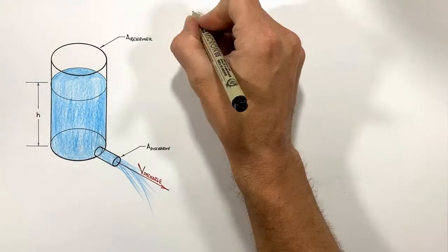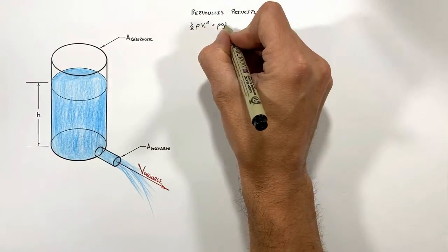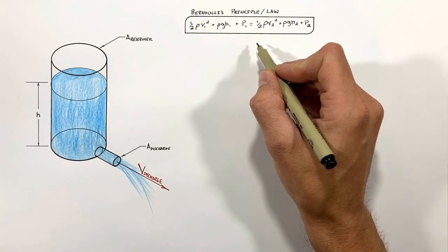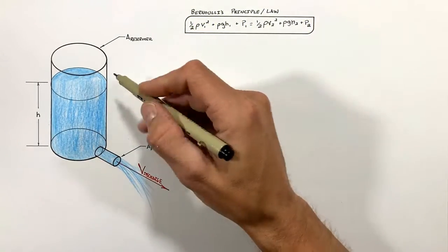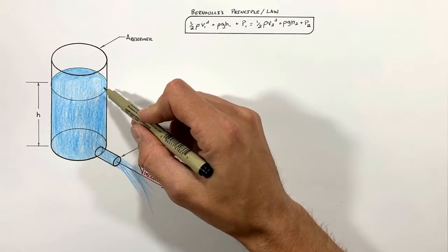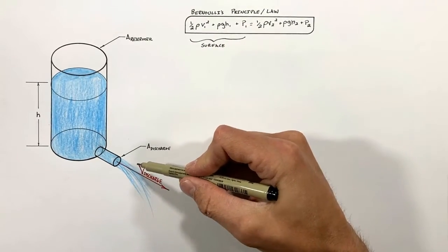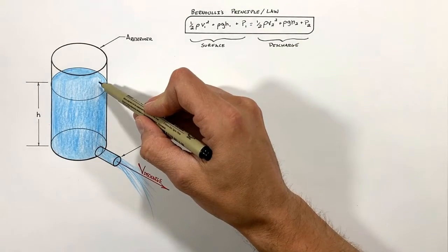So to solve for the fluid velocity here at the drain we're going to turn to Bernoulli's principle, and we're going to apply Bernoulli's principle to two points in the fluid. The first being at the surface of the fluid in the reservoir, the second being here at the drain hole.